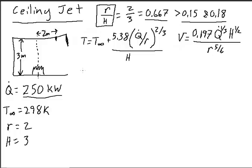So to find the temperature, with this value being greater than both 0.15 and 0.18, we're going to use this equation to find the temperature and this equation to find the velocity. In the velocity equation, in the third version of the SFP Handbook, this number was 0.195, so I assume the new version is correct.